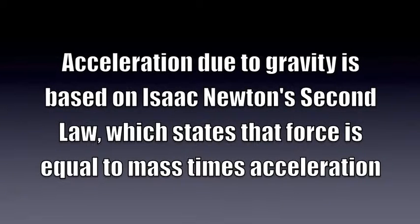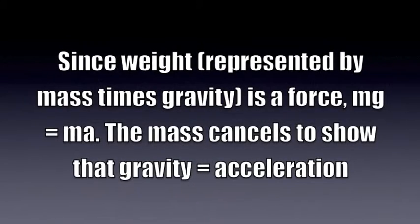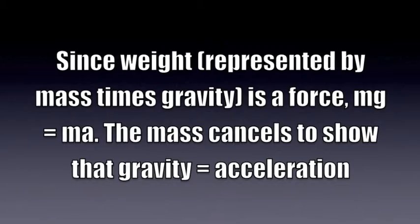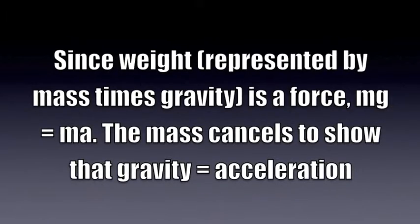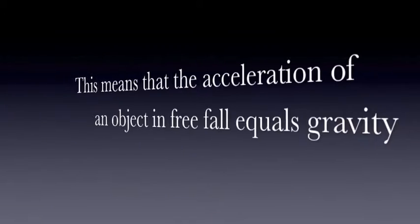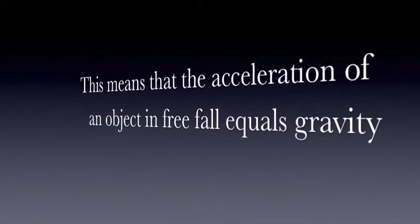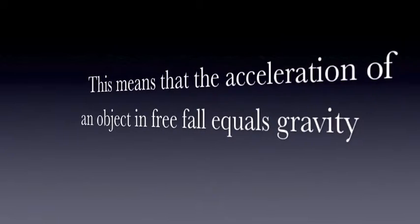Acceleration due to gravity is based on Isaac Newton's second law, which states that force is equal to mass times acceleration. Since weight is a force, mg equals ma, and the mass cancels to show that gravity equals acceleration. This means that the acceleration of an object in free fall equals gravity.